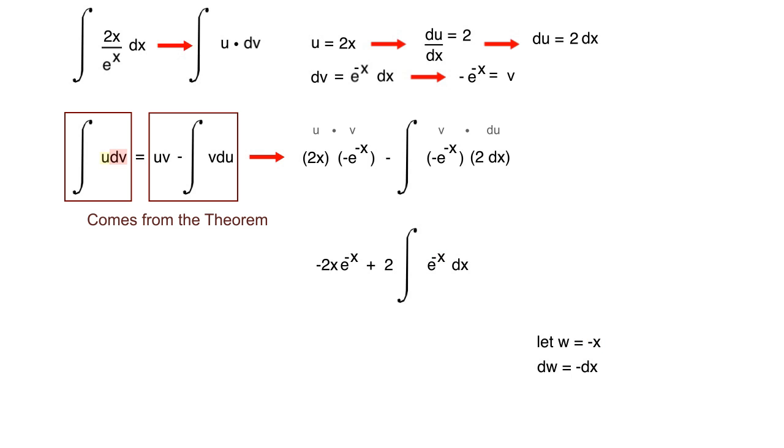What this will give us is negative 2x e to the negative x, and what we're going to want to do now is multiply the inside and the outside by a negative one. Because remember, our dw is negative dx, we have a positive dx inside of our integral, we want a negative before we can integrate it. So we multiply the inside by a negative one, but we have to account for that on the outside by also multiplying the outside by negative one, otherwise we change the value of the integral.